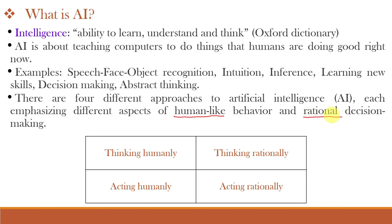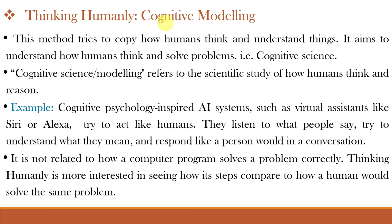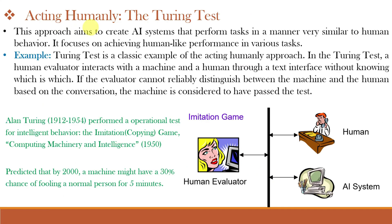Human-like means man-like behavior and rational means logical behavior. The first approach is thinking humanly — that is, thinking like humans. This is also known as cognitive modeling, which means the study of how humans think and reason. The AI tries to copy how humans think and understand things. For example, virtual assistants like Siri, Alexa or Ok Google all try to act like humans — they listen, understand what we mean, and respond as another person would in conversation. This approach is not about how a computer solves a problem correctly, but how its steps compare to how a human would solve the same problem.